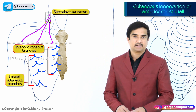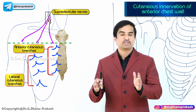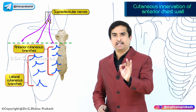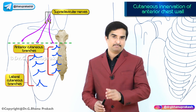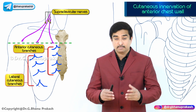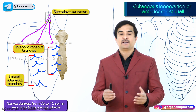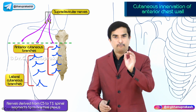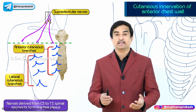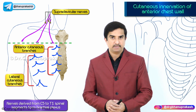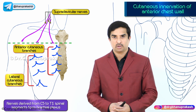An important point to note is that the area supplied by the C4 spinal segment directly meets the area supplied by the T2 spinal segment. This is because the nerves derived from C5 to T1 spinal segments form the brachial plexus and supply the upper limb. With this, we have completed the cutaneous innervation of the anterior chest wall.